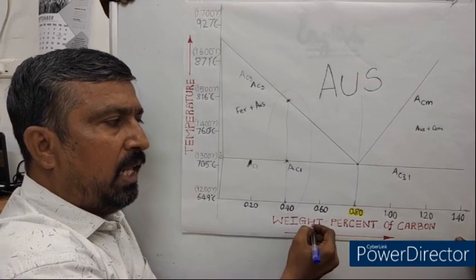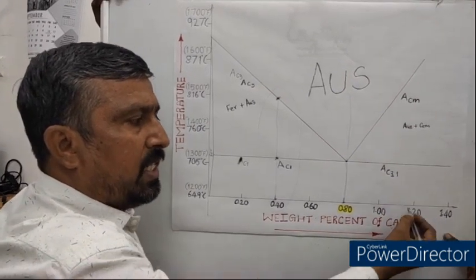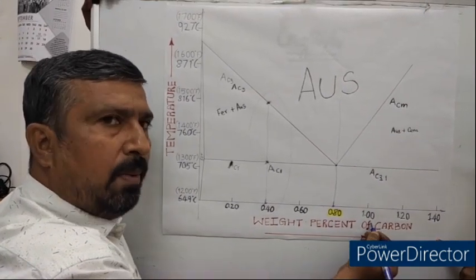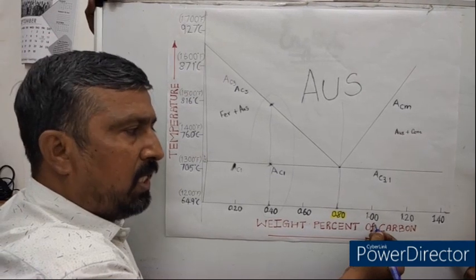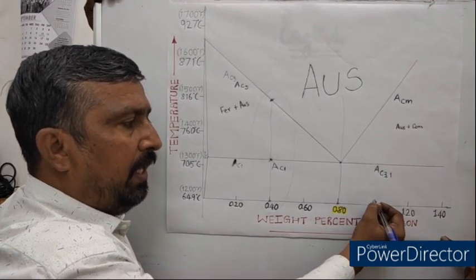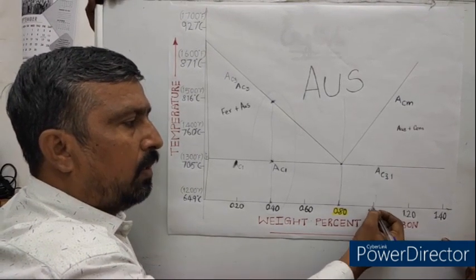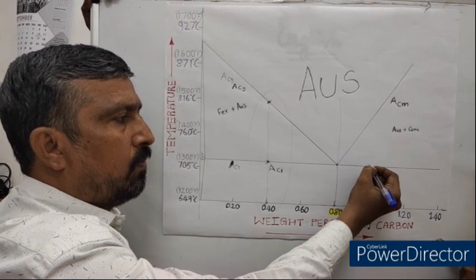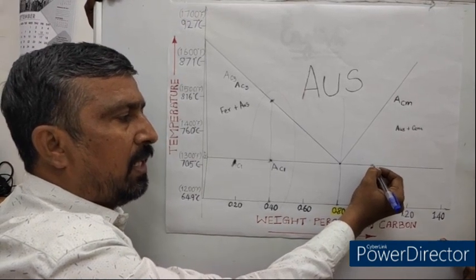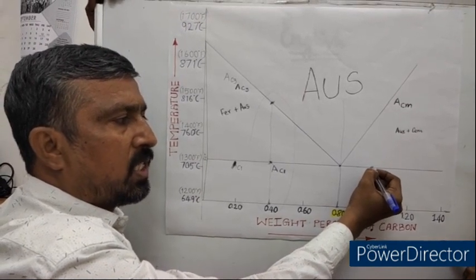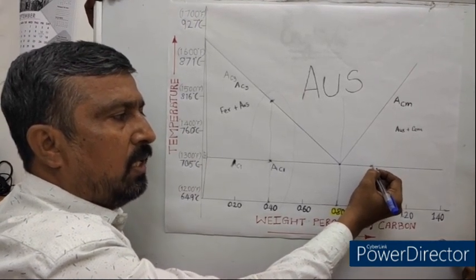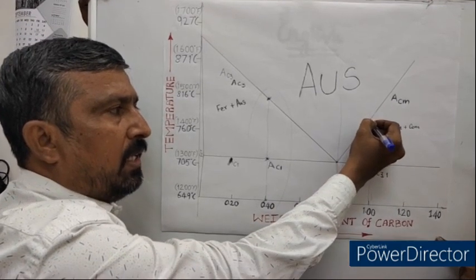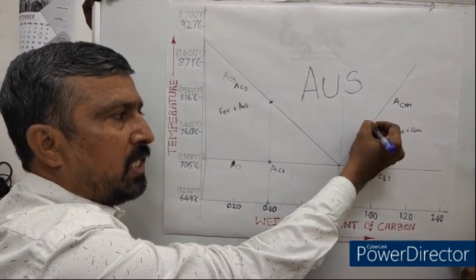Similarly, for hyper-eutectoid steel, if you consider 1% carbon steel on heating, this is the point where the transformation starts, and this is the point where the transformation ends.